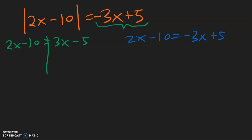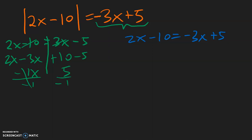Now we solve for x for both of them. We want to get the x's on the left side, so this 2x can stay. This negative 3x needs to come over here, becomes negative 3x. The numbers need to be on the right side, so this negative 10 needs to move — becomes positive 10 — and this minus 5 stays. So 2 minus 3 is negative 1x. 10 minus 5 is positive 5, and now we need to divide by negative 1.